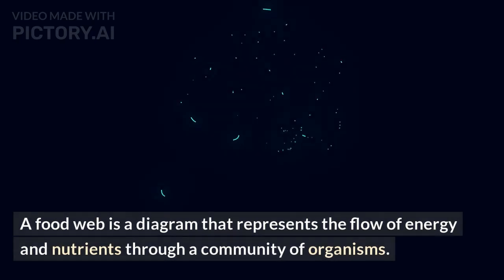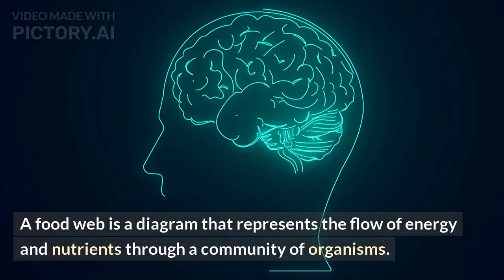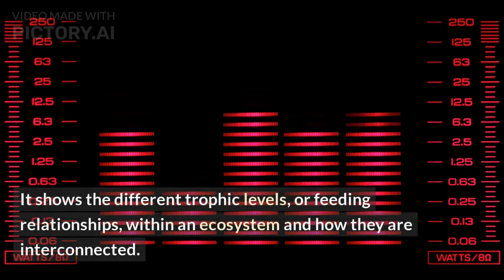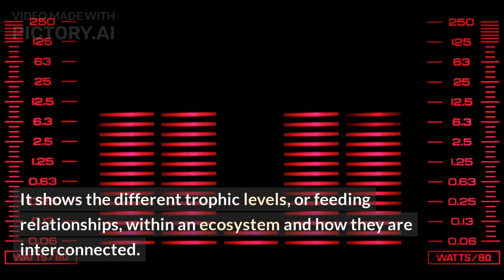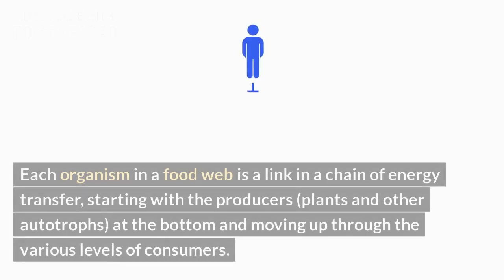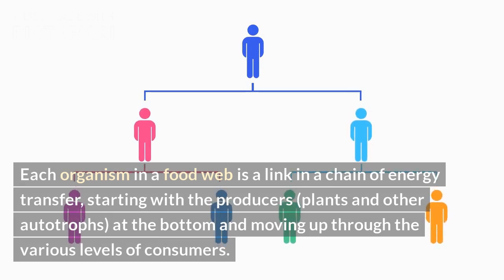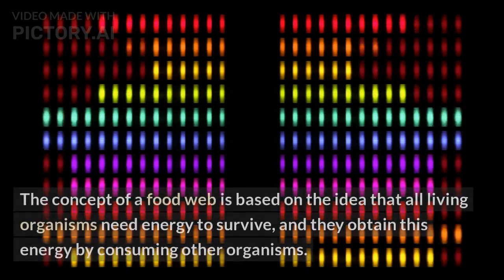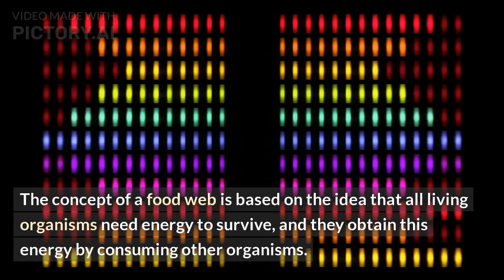A food web is a diagram that represents the flow of energy and nutrients through a community of organisms. It shows the different trophic levels, or feeding relationships, within an ecosystem and how they are interconnected. Each organism in a food web is a link in a chain of energy transfer, starting with the producers — plants and other autotrophs — at the bottom and moving up through the various levels of consumers.